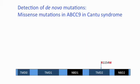This single mutation is a missense mutation in the ABCC9 gene. This gene encodes an ATP-dependent potassium channel, and the effect of the amino acid change is predicted to be damaging by all prediction programs.